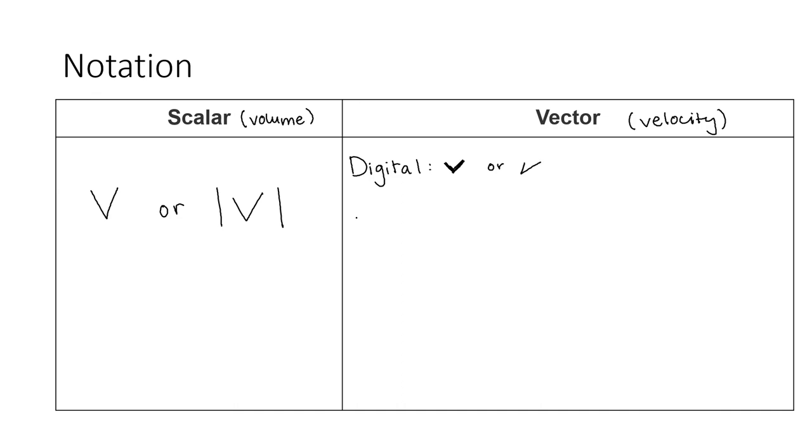This notation is also used by Richard Feynman. We can also symbolize vector quantities using a lowercase letter with a line below it or an arrow on top of it, which can also be written within an absolute value sign.